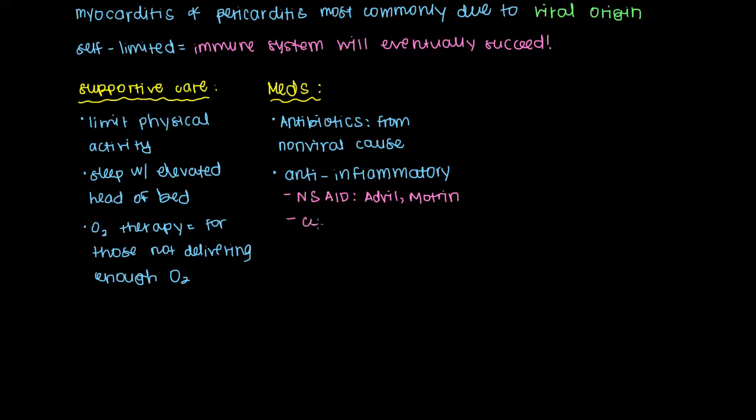If NSAIDs or non-steroidal anti-inflammatory drugs are not enough, you can add what's called colchicine. Colchicine is also an anti-inflammatory drug. It's usually used in gout most commonly, but it definitely works here to limit inflammation.